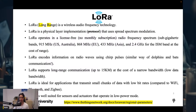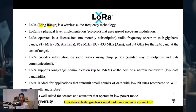LoRa encodes information on radio waves using chirp pulses, a method similar to how dolphins and bats communicate. LoRa is capable of long-range communication, reaching distances of up to 15 kilometers, but this comes at the expense of narrow bandwidth, meaning it transmits data at lower rates compared to technologies like Wi-Fi. Due to these characteristics, LoRa is well suited for applications that need to transmit small amounts of data at low bit rates, and is particularly useful for sensors and actuators operating in low power mode.